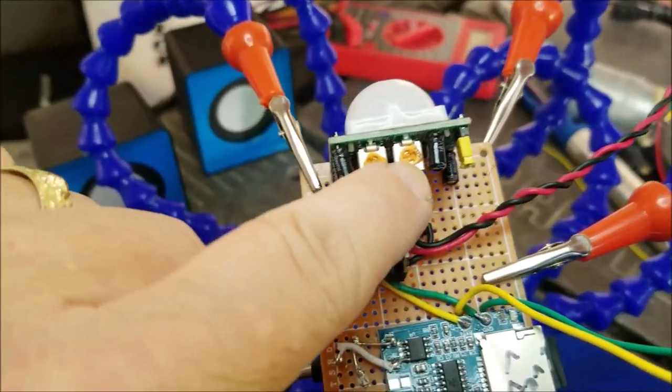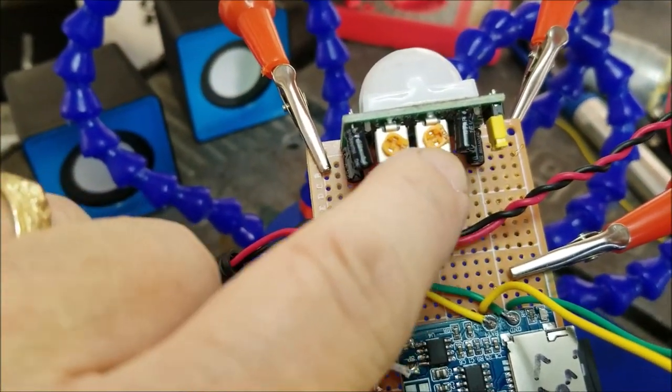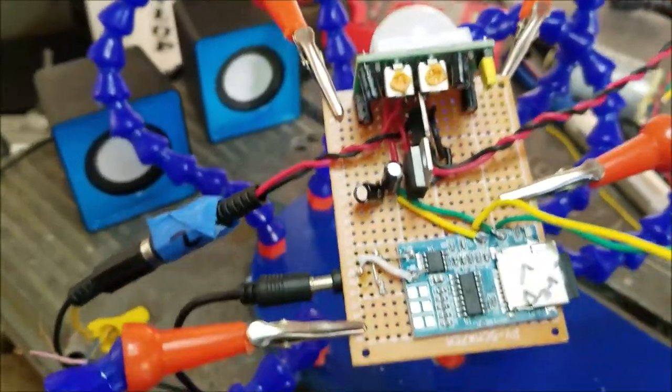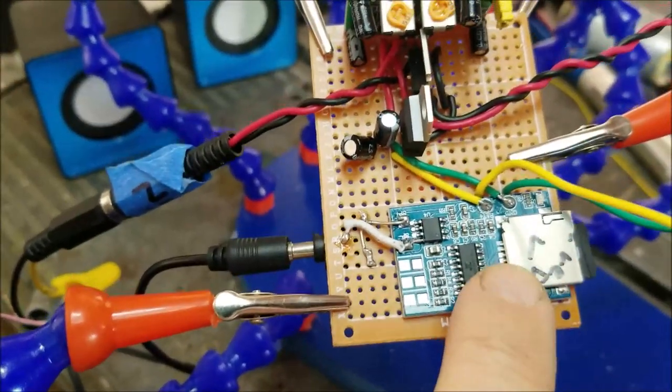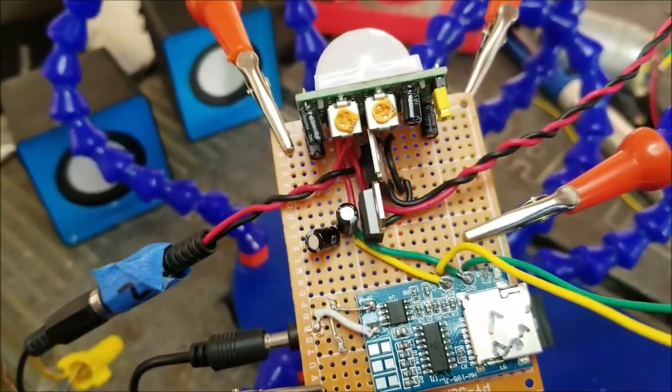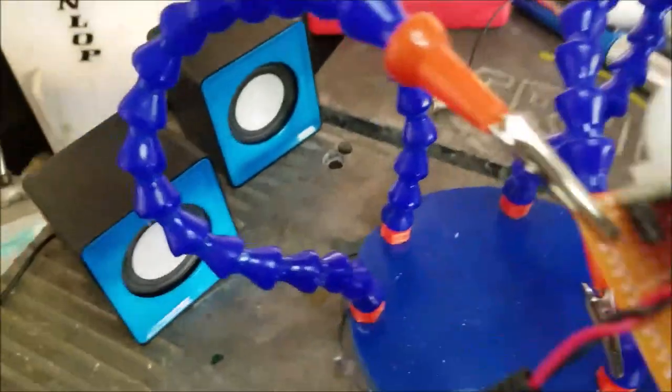And then the timer on the PIR is basically set for 45 seconds, so that the entire sequence is at the same rate or speed as the MP3 file that's on there, which is just a baby crying and singing.